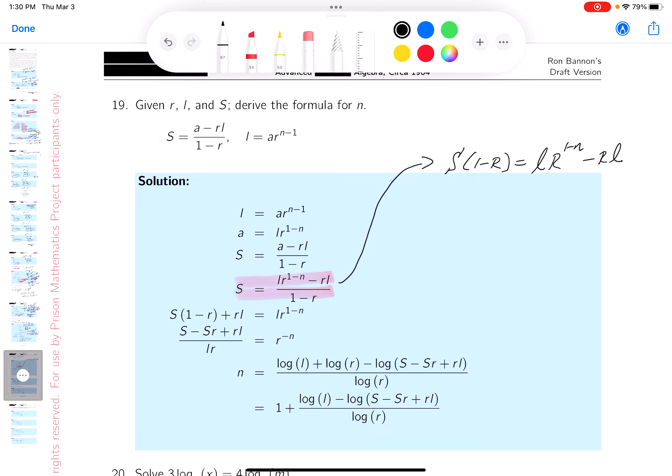So it's going to be S(1 minus r) plus rl equals L times r to the (1 minus n). So, again, in my notes, there might be more stuff written in my notes. But I realize this is a critical juncture to get out.